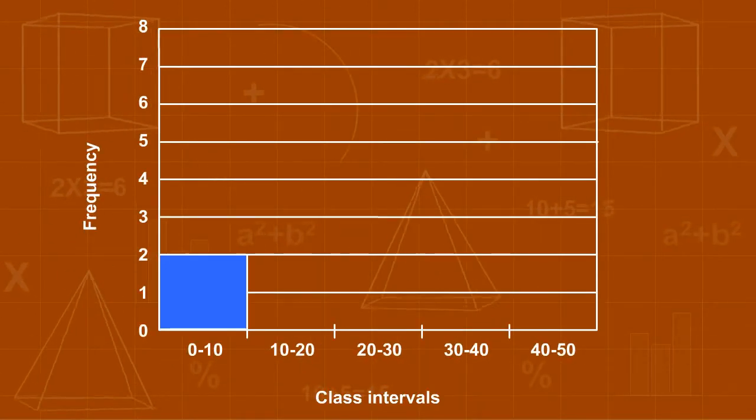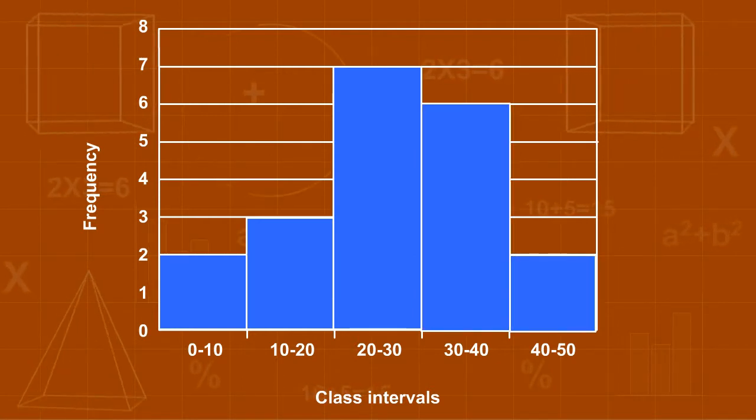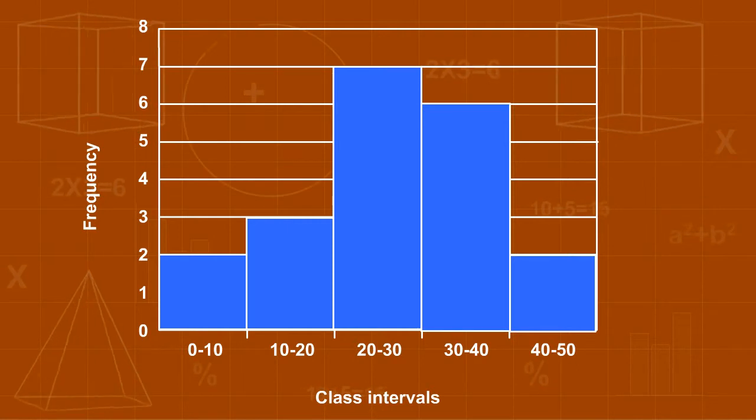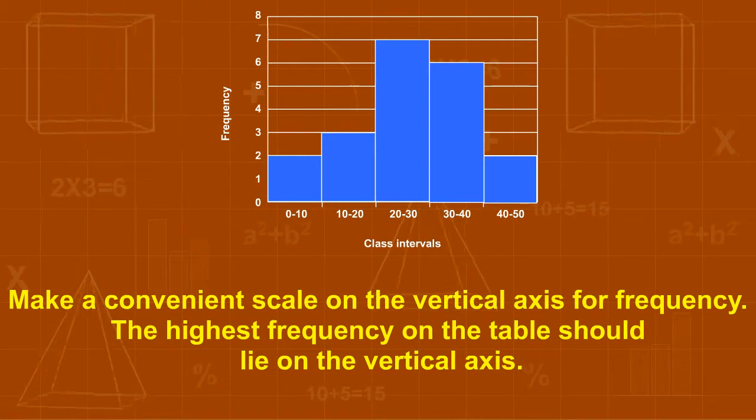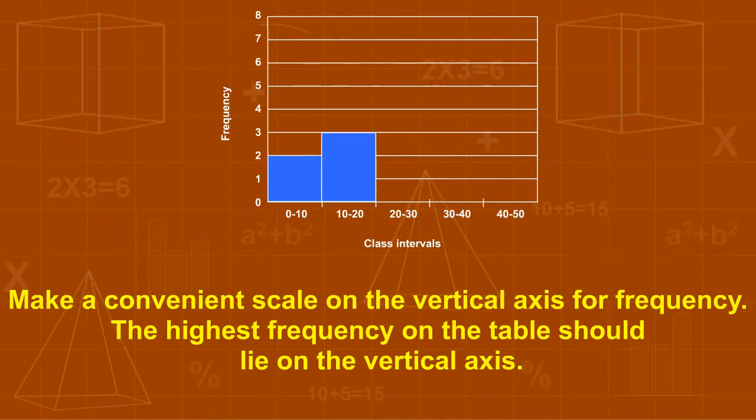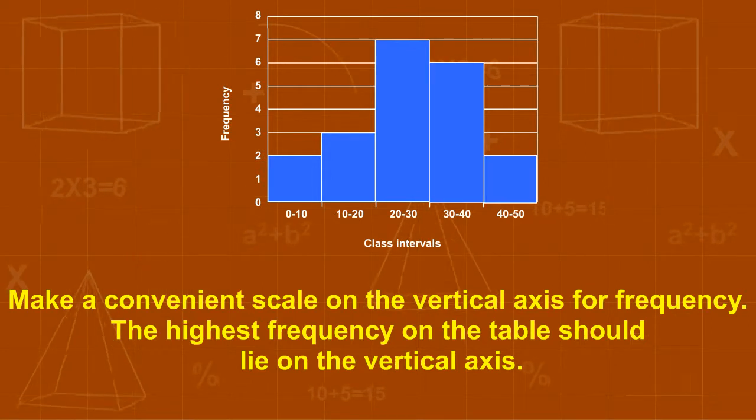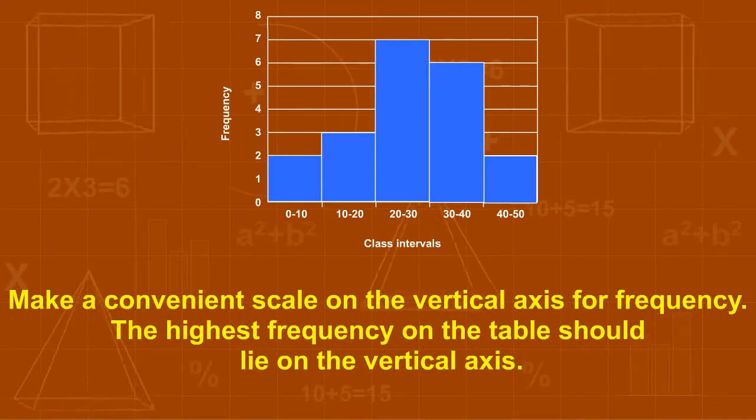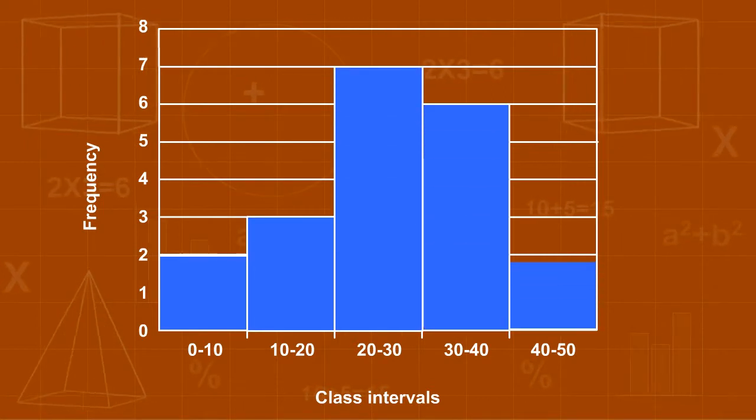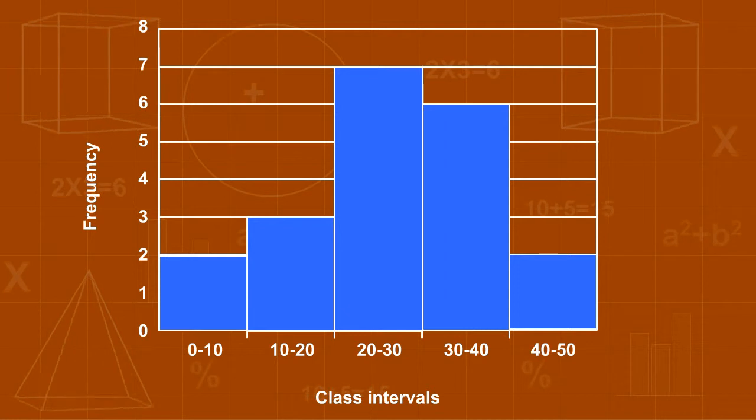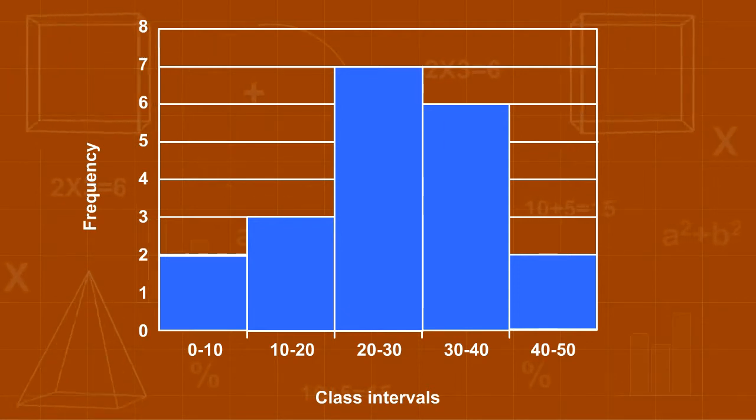Make the Frequency Table. Divide the horizontal axis into equal intervals for the class intervals without leaving a gap in between. Make a convenient scale on the vertical axis or frequency. The highest frequency on the table should lie on the vertical axis. Draw the bars according to the class interval and frequency. Give an appropriate title for the Histogram and label the horizontal and vertical axis.